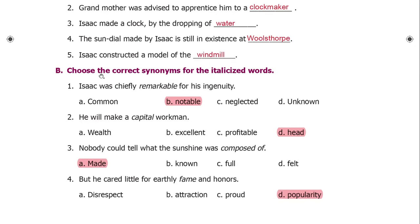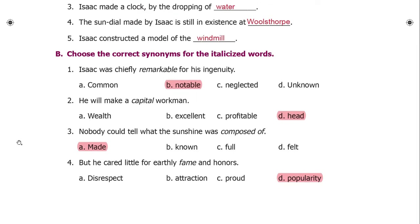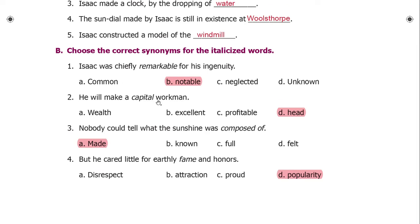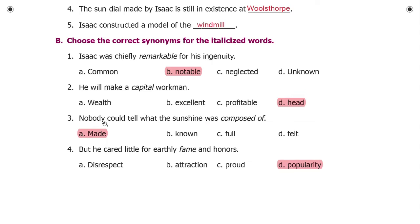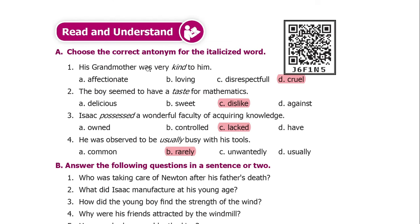Choose the correct synonyms for the italicized words. Isaac was chiefly remarkable for his ingenuity — 'remarkable' means 'notable'. He will make a capital workman — 'capital' means 'on the head' or 'excellent'. Nobody could tell what the sunshine was composed of — 'composed of' means 'made of'. He cared little for earthly fame and haunt — 'fame' means 'popularity'.